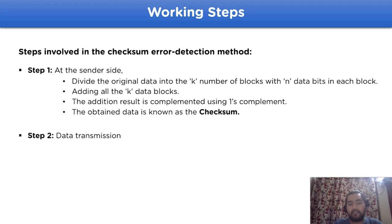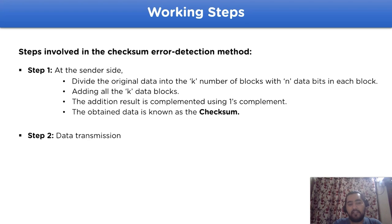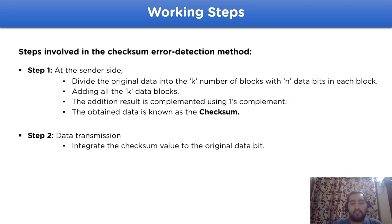In step two, data transmission: after we have received the checksum value from the checksum method, we will add it to the front of the original data and transfer it to the network channel to the receiver side.